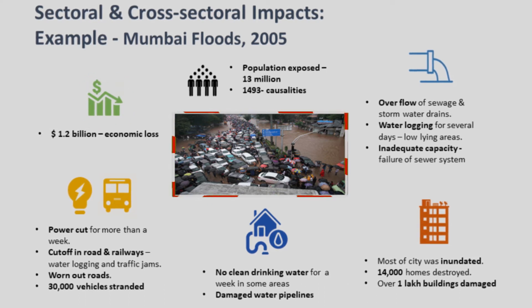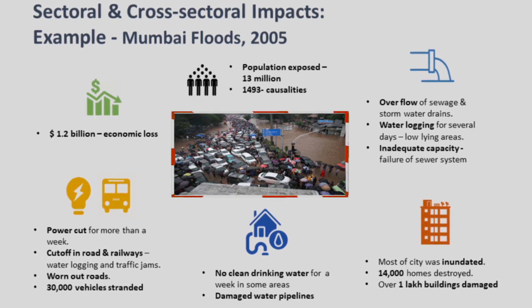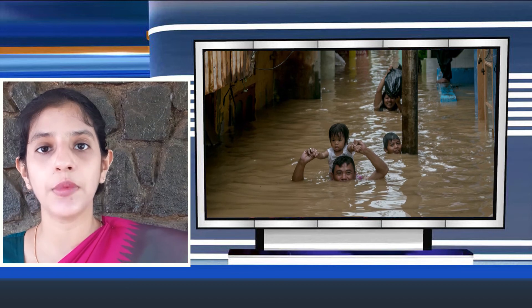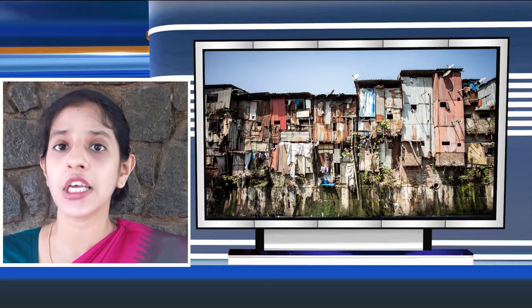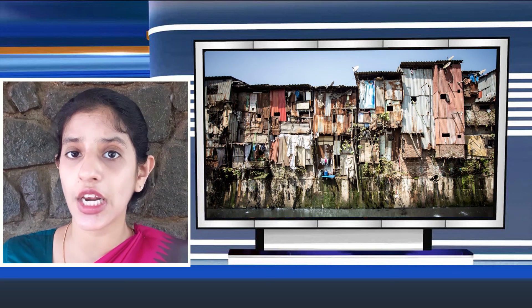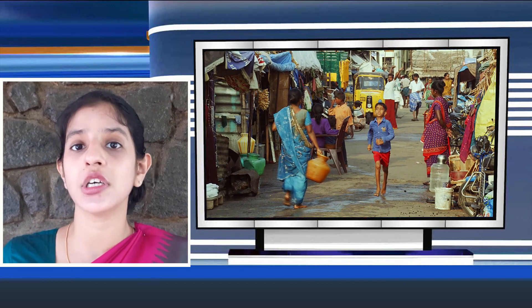Similar losses have been incurred in other Indian cities such as Chennai and Kochi due to climate change. Climate change poses distinct developmental challenges to these cities owing to rapid population growth, high levels of inequality, and the inability of critical infrastructure and services to adapt to projected climatic changes. Informal settlements in particular are spaces where these challenges manifest in extreme forms, affecting access to water supply, electricity, sanitation and employment opportunities.